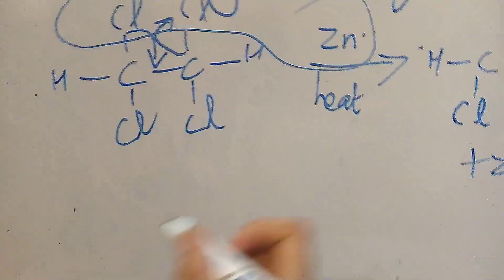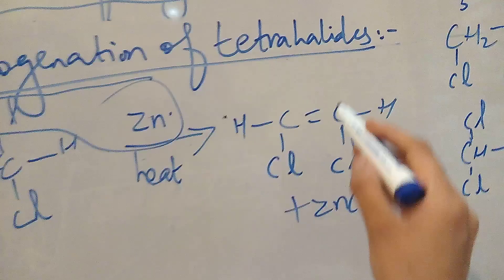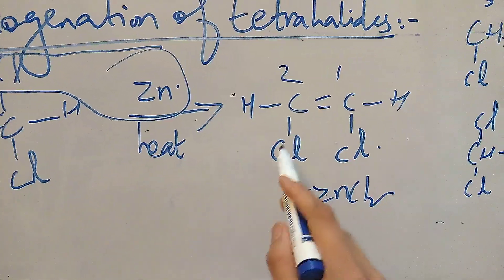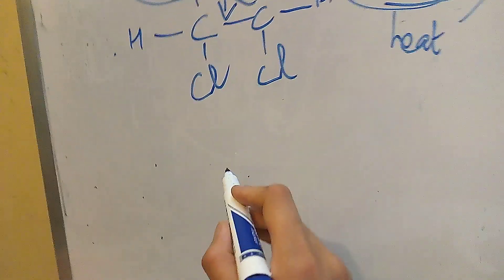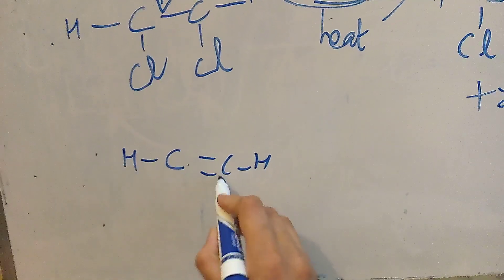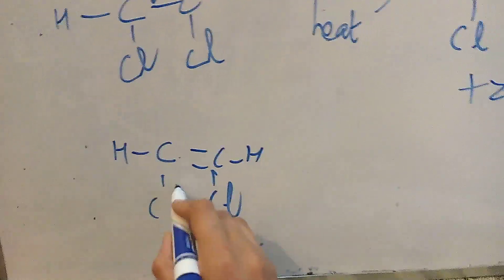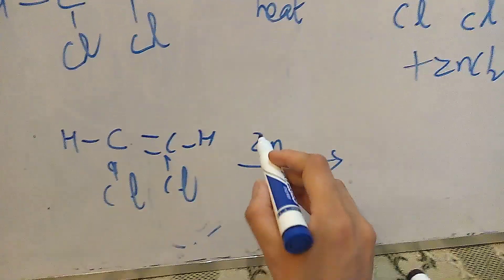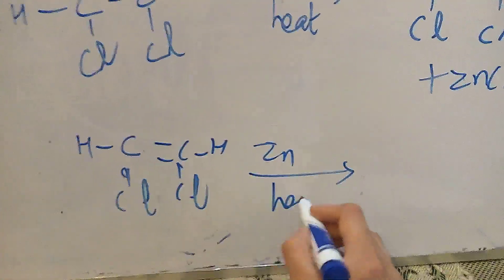In the second step, we will carry out dehalogenation again. This product is 1,2-dichloroethene. Again we will carry out its dehalogenation in the presence of zinc and heat it again.